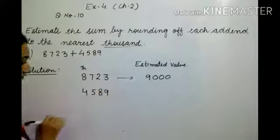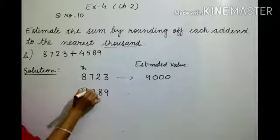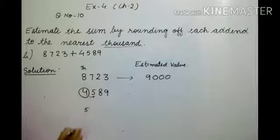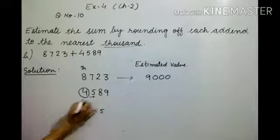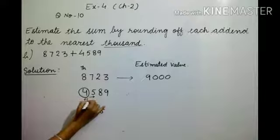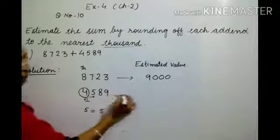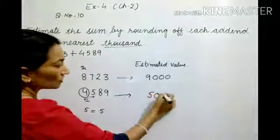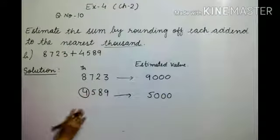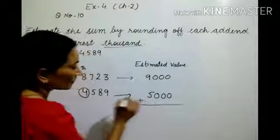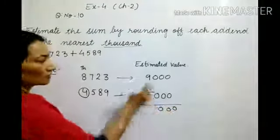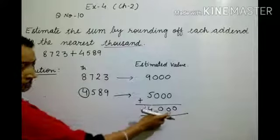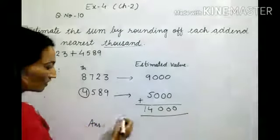Now take the second number, 4,589. Circle the thousands place digit, which is four. Check the digit to its right, which is five. Compare with five — both are equal, so we add one to the thousands place digit. Four plus one is five, and the remaining three digits turn to zero. So the estimated value of 4,589 is 5,000. Now add the estimated values: three zeros, and nine plus four is fourteen, giving 14,000. That is the estimated sum.